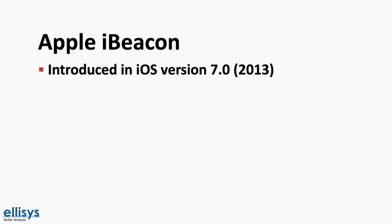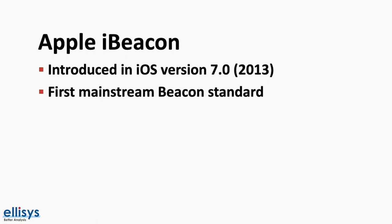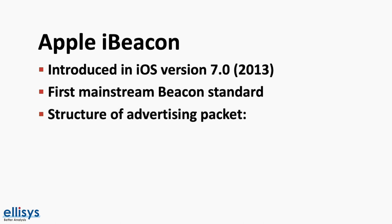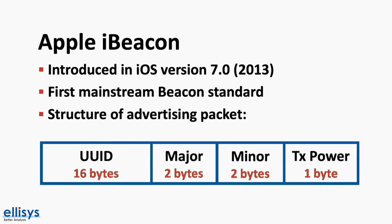Let's talk about each of these standards in a bit more detail. First, let's look at Apple's iBeacon standard. iBeacon was introduced in iOS version 7.0 in 2013 and was the first mainstream standard for Bluetooth beacons. The standard defines the packet structure of the advertising packets sent by the beacons. This includes the UUID which occupies 16 bytes, a major number occupying 2 bytes, a minor number occupying 2 bytes, and finally the transmission power occupying 1 byte in this packet.